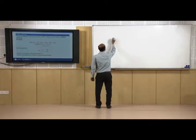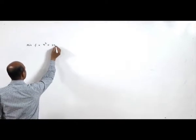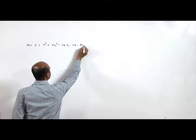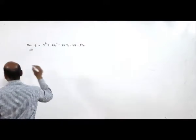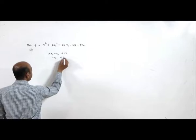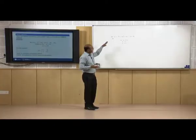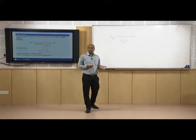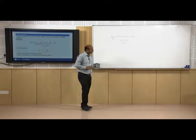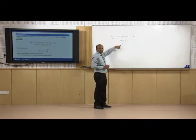Suppose we have the problem: minimize x₁² + 2x₂² minus 2x₁x₂ minus 6x₁ minus 8x₂, subject to 2x₁ minus x₂ less than or equal to 13, and x₁, x₂ non-negative. This is a quadratic programming problem because the objective function is quadratic and all constraints are linear. We will solve this using Wolfe's method.